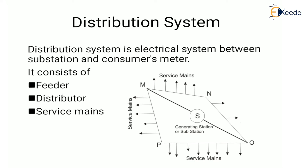On the feeder, no tappings are taken so that the current in it remains the same. The current carrying capacity is the main consideration while designing a feeder. Here SM and SO are the feeders. Next is the distributor — a distributor is a conductor from which tappings are taken out for supply to the consumer.